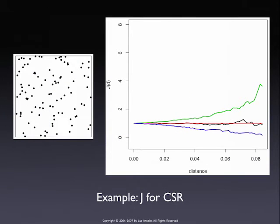For a complete random (homogeneous Poisson) point pattern, we would want the J-function to be 1. Because it's estimated there's some sampling variance, so it won't be constant, but it's pretty close — the black line follows the value-1 line fairly closely. More importantly, it stays inside the randomization envelope for the whole range of distances, so clearly we cannot reject complete spatial randomness.